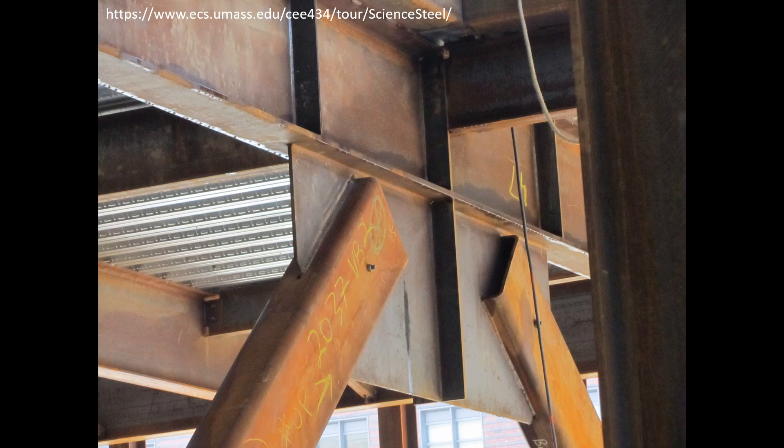Here's another example of a concentric gusset plate connection, this time used in a brace frame configuration. In this case, you can clearly see that the erection bolts were left in place after the welds were made between the wall of the HSS and the gusset plate.